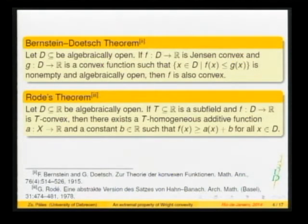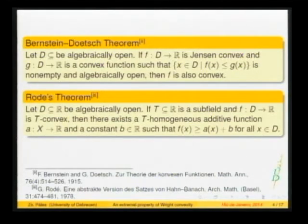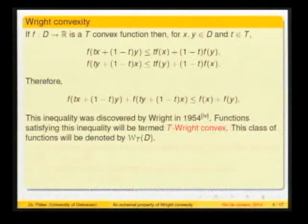In particular, if T is the set of rational numbers, this says that if F is a Jensen convex function, then there is an additive function such that F is greater than or equal to that additive function plus a constant B, since additive functions are automatically Q-homogeneous.